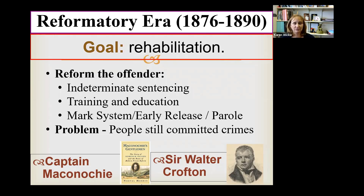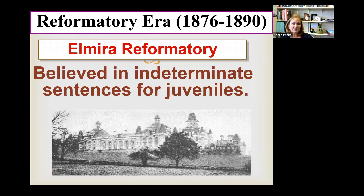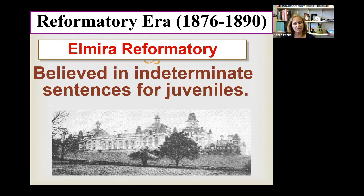The problem was people were still committing crimes — even after rehabilitation, they were recommitting. People were getting angry that inmates were given a second shot and still committing crimes. One of the first reformatories was the Elmira Reformatory in New York, designed for juveniles. It still exists today. The belief was in rehabilitation for juveniles through indeterminate sentencing, with the hope of reforming them and returning them as productive members of society.